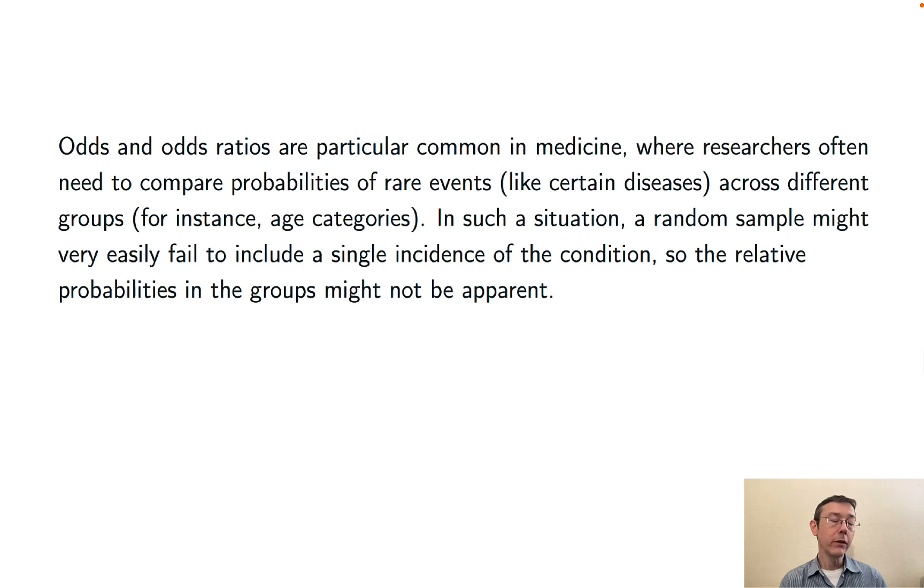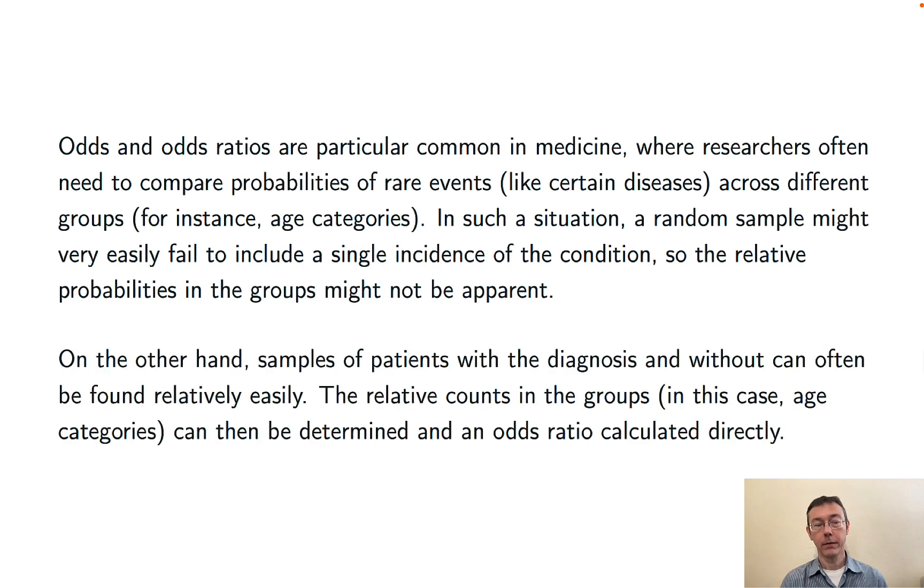And so relative probabilities in the two groups might not be apparent. On the other hand, it's comparatively easy in many cases to get samples of patients that have the diagnosis and don't. And then you can compute relative counts in the two groups and compute an odds ratio relatively directly.